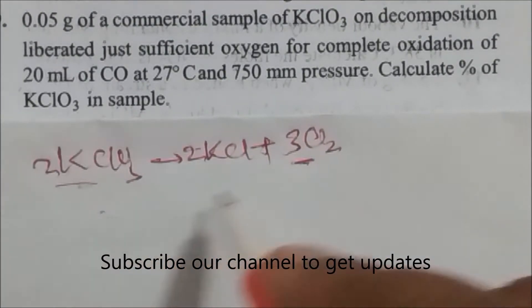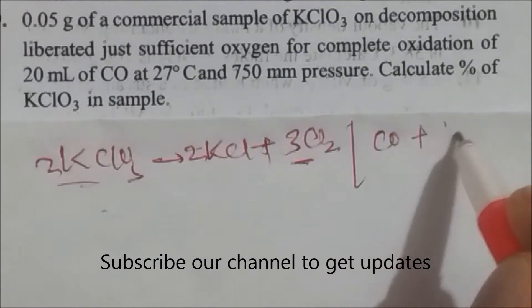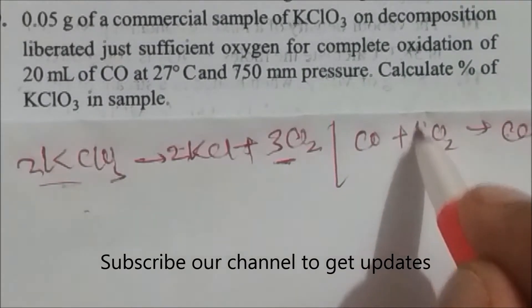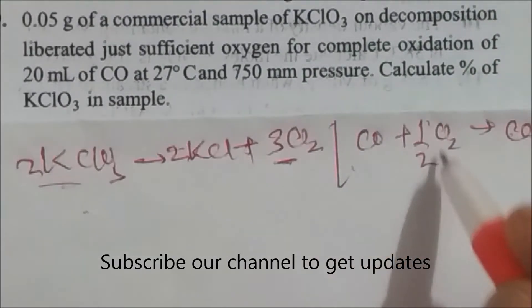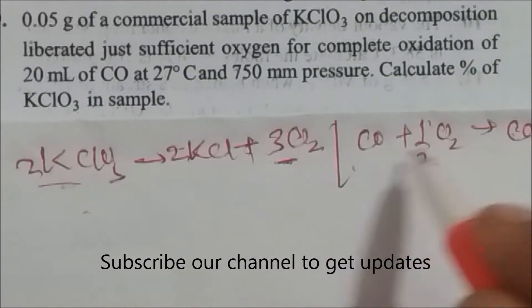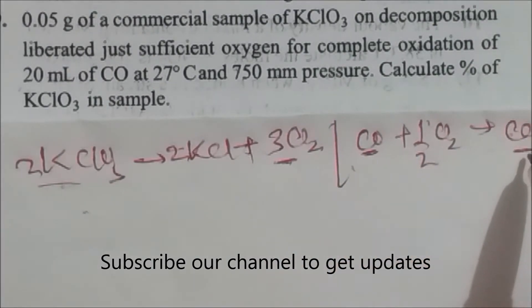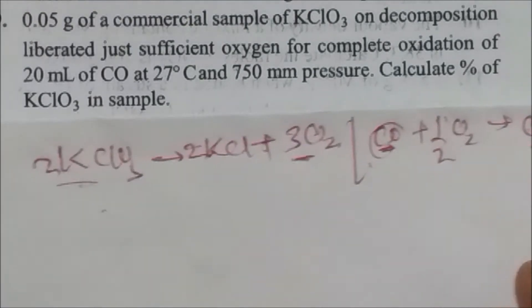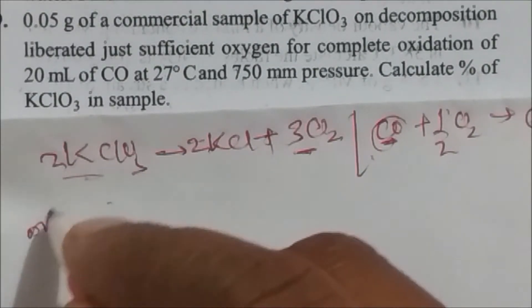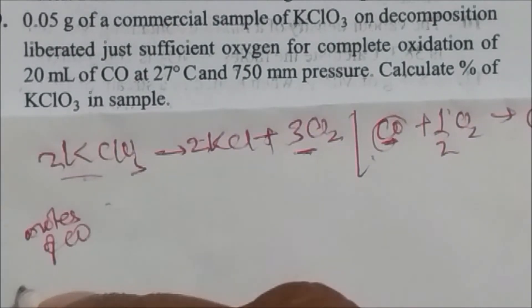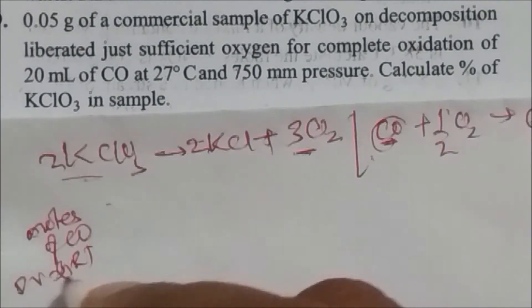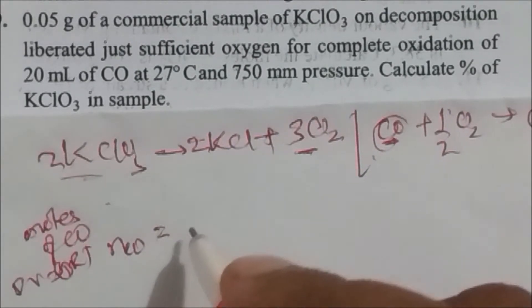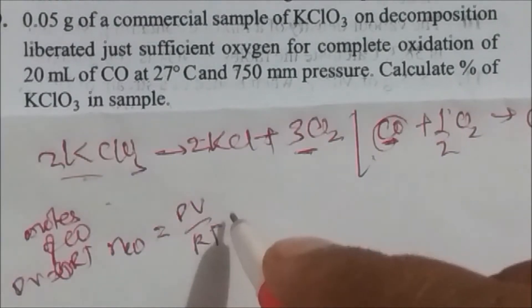This oxygen reacts with carbon monoxide: CO + ½ O2 → CO2. So for 1 mole of CO we require half a mole of oxygen. To find moles of CO, we use the ideal gas equation PV = nRT, where n = PV / RT.